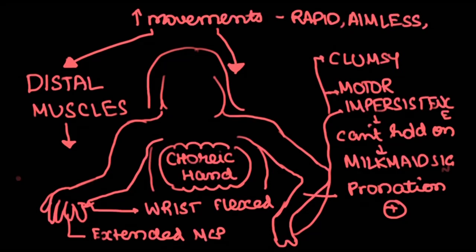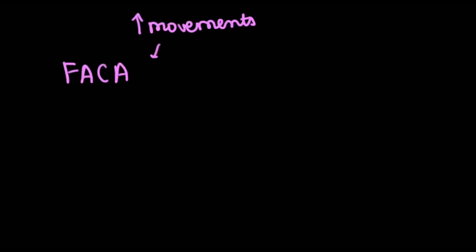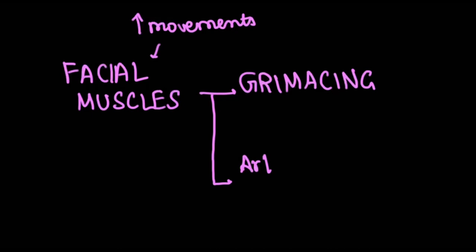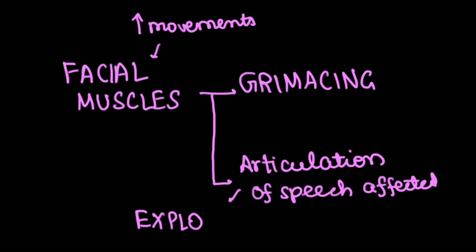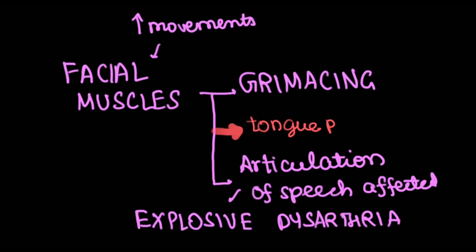Increased movements in the facial muscles contribute to constant grimacing. Articulation muscles of speech are also affected, contributing to explosive dysarthria seen in these patients. When patients are asked to protrude their tongue, since they are contracting and releasing, the tongue will come out and go back. This is compared to the jack-in-a-box phenomenon.